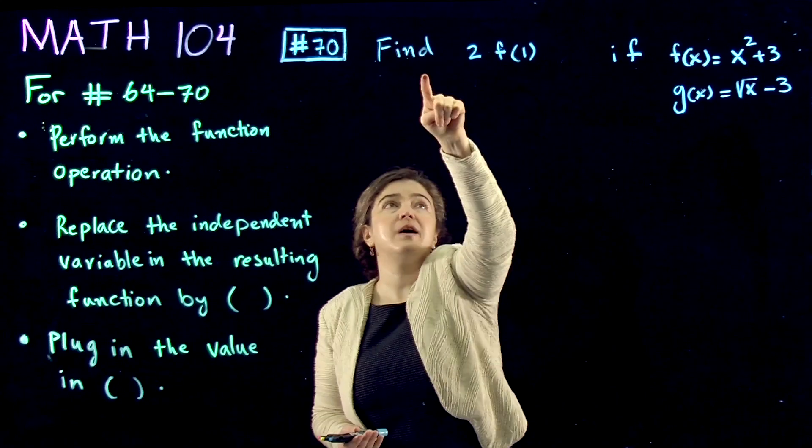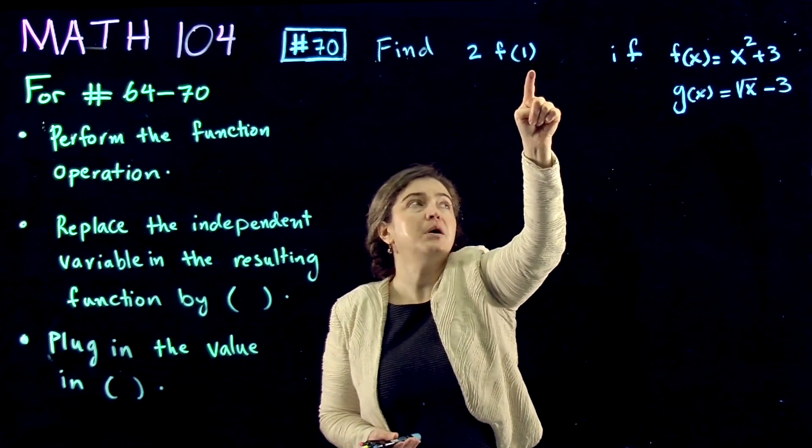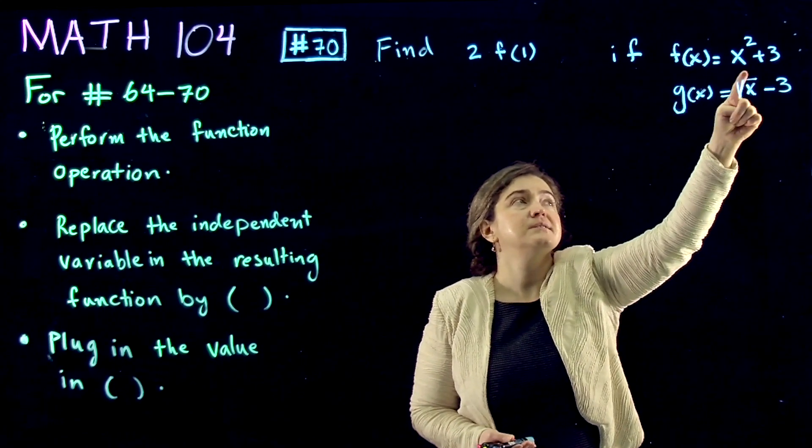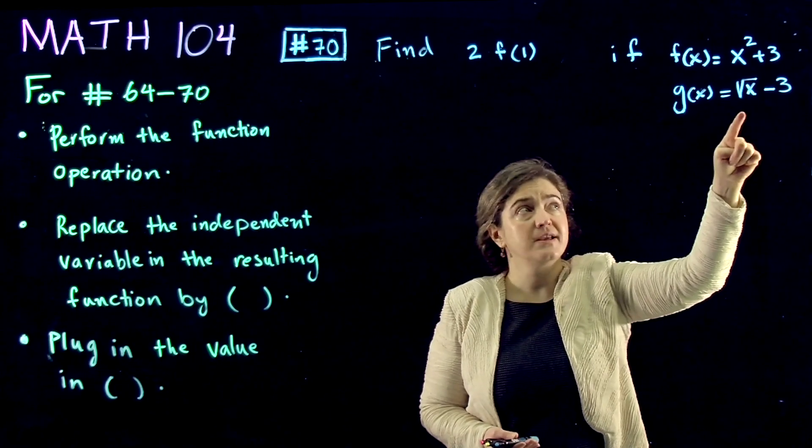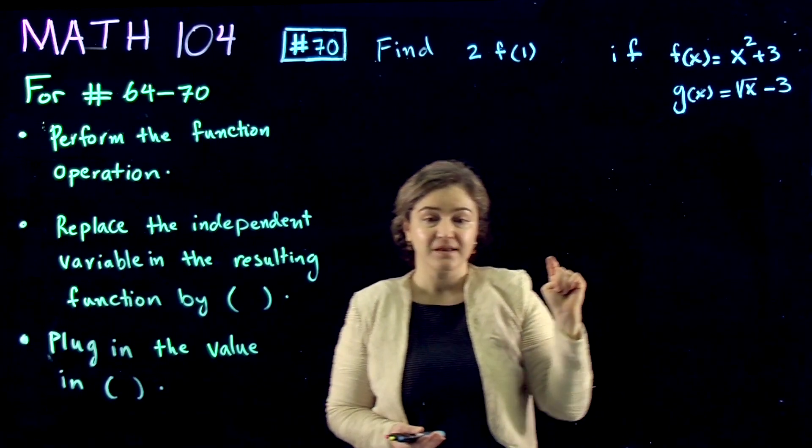And here we're finding 2f of 1, where f of x is x squared plus 3 and g of x is square root of x minus 3.